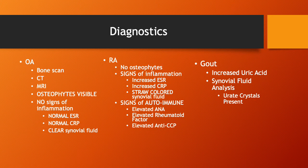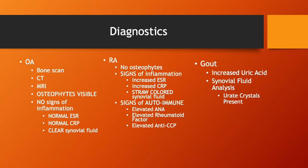Looking at diagnostics, OA is a bone problem so we use bone scans, CT, MRI, and X-rays. On X-rays we'll see osteophytes — little projections of bone from rubbing. Importantly, inflammatory markers are normal in OA: no elevated ESR, no elevated CRP. If we aspirate the synovial fluid, it would be clear because there's no inflammation. When diagnosing, it's important to note what's normal, not just what's abnormal.